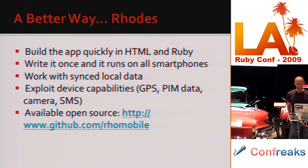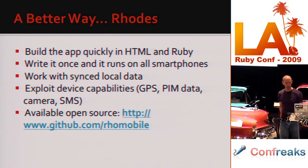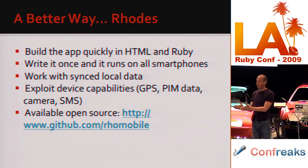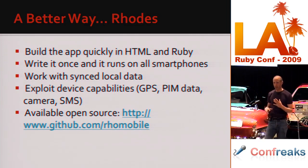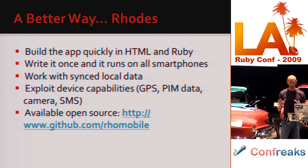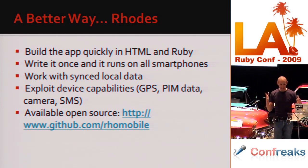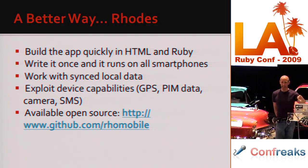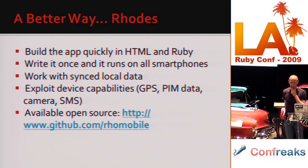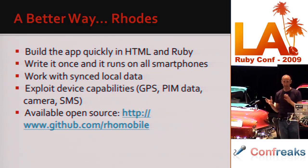Rhodes works with synced local data, exploits device capabilities like GPS, camera, and SMS, and it's all available open source at github.com/rhomobile. When I say it's open source, it's real-time. Because we have engineering in Russia, the sun never sets on the Rhomobile development team. People file issues to the Google group and there's a check-in within 24 hours. We're not doing the thing where we drop a snapshot every six months — it's all real-time.